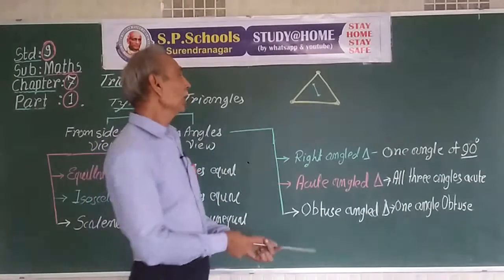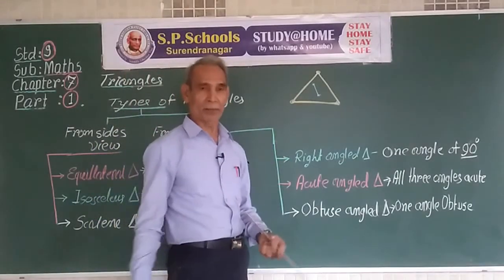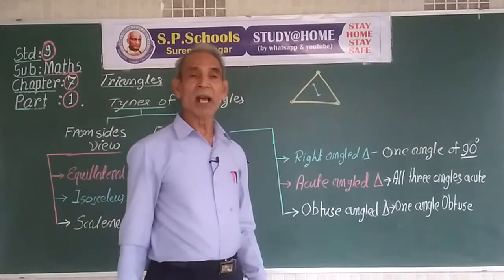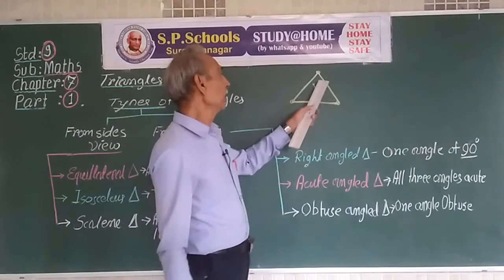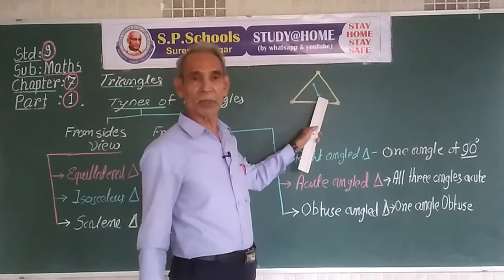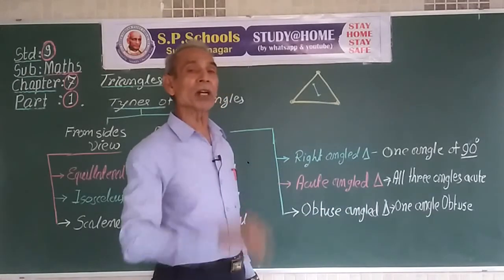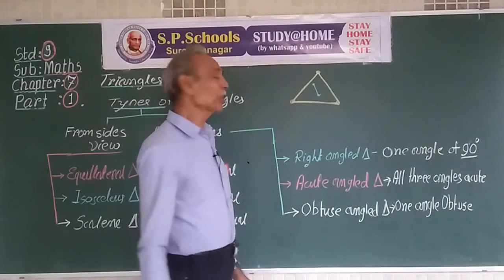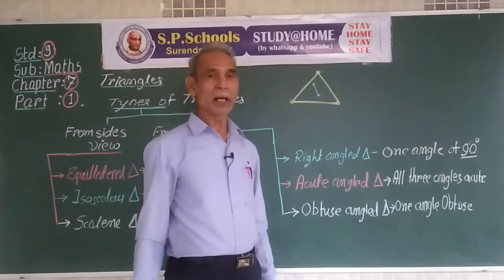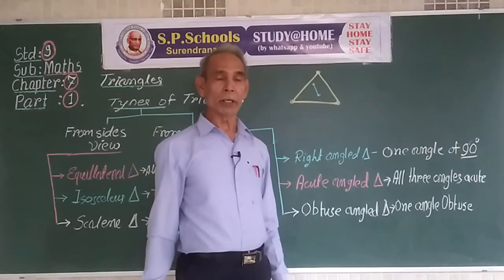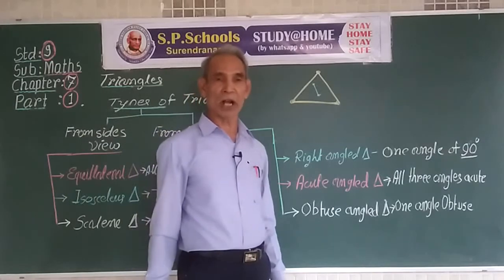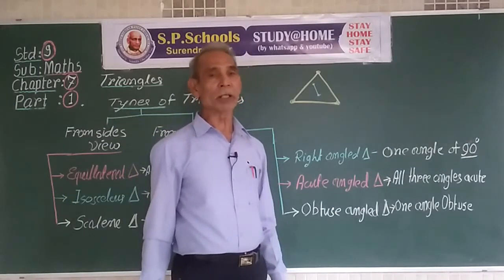Therefore, we call a triangle a convex figure, because the line segment joining any two points of the interior of the triangle will always lie in the interior. Other convex figures include square, trapezium, regular pentagon, hexagon, heptagon, and circle — all these are convex figures.